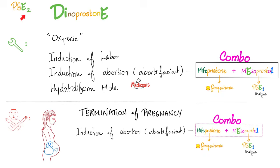Let's talk about the prostaglandin E2 analog — dinoprostone. Why do you use it? It's oxytocic — it makes the uterus contract. For this same reason, it's contraindicated in pregnancy unless you want to induce labor. You can use it to induce labor because it increases uterine muscle contraction. Also indicated for induction in hydatidiform mole or eclampsia.